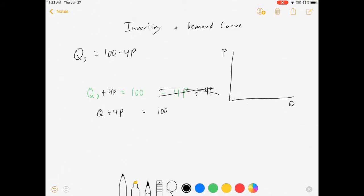Well, I want to get rid of those Q's also. I want to get rid of that Q and get P by itself, right? So my next step, I'm going to subtract Q from both sides, so that those cancel out, and I'm left with 4P = 100 - Q.